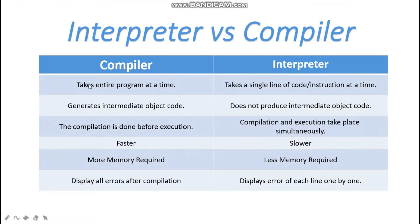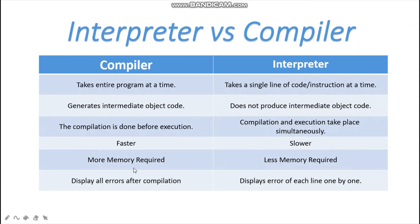When using the interpreter, compilation is done before execution line by line. The advantage of the compiler is that it checks all errors at once, making error detection efficient. The compiler is faster in terms of processing speed, but requires more memory. The interpreter is slower because it works line by line, but requires less memory. So this is the difference between compiler and interpreter. If you have any doubts, please let me know in the comment box. We'll meet in the next video — thank you!